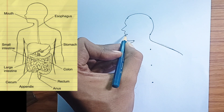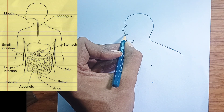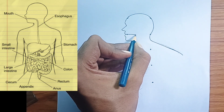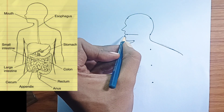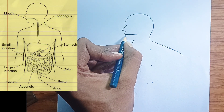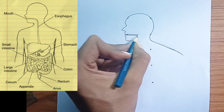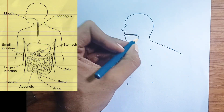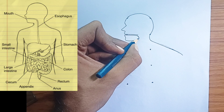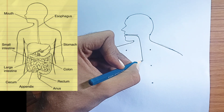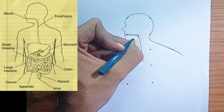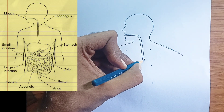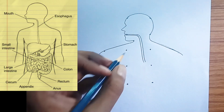Large intestine: a wider tube that follows the small intestine. Its primary functions are to absorb water and electrolytes from indigestible food matter and to form feces. It includes the cecum, a pouch connected to the junction of the small and large intestines.